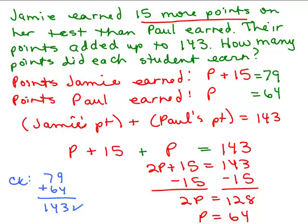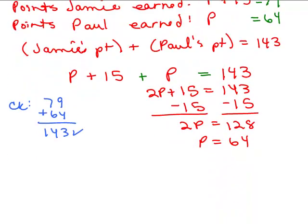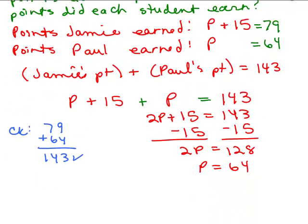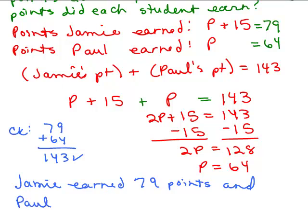Remember, you want to write your answer more clearly. You could say Jamie earned, now how many did Jamie earn? She earned the 79, 79 points, and Paul earned the 64 points.